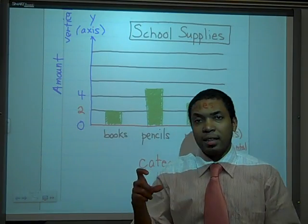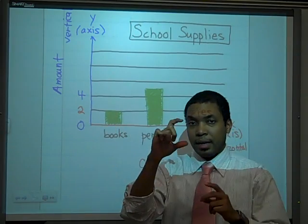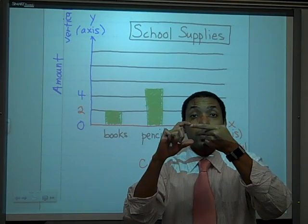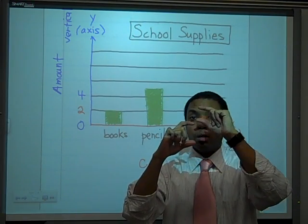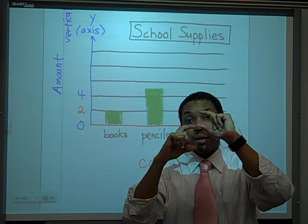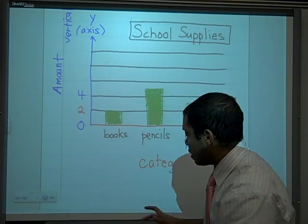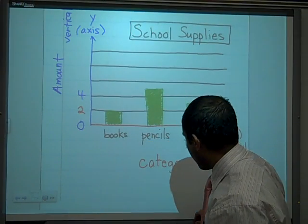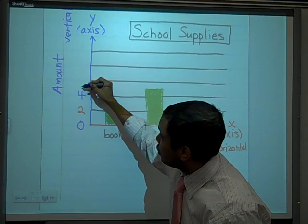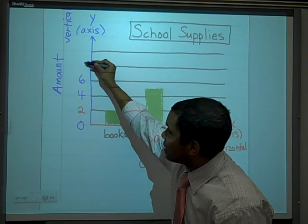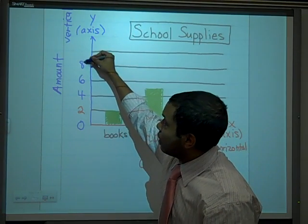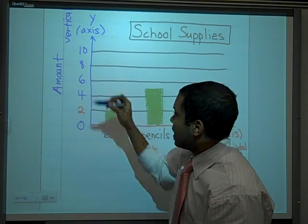Therefore, the scale now from zero to the first line is two. So therefore, every single line is going to be two more than the line below it. So this would be four. This would be six. This would be eight. And so on and so forth. Let's label that in right now. Two more than four is six. Two more than six is eight. Two more than eight is ten.